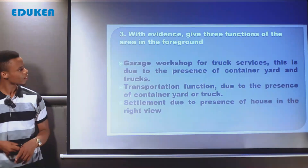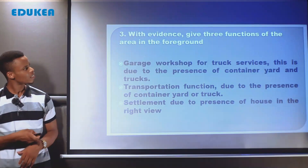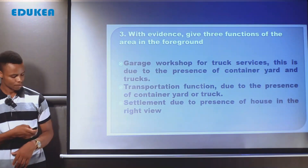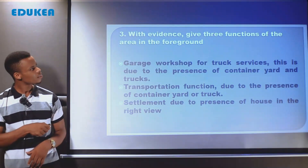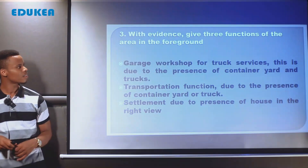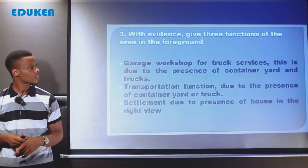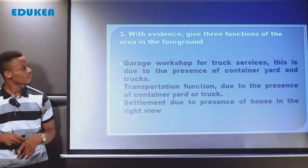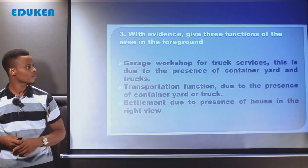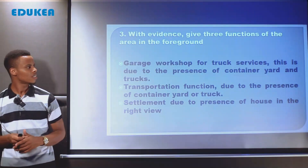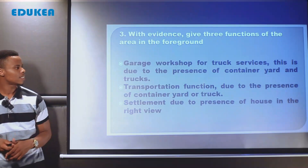Question number three asks: with evidence, give the land use fraction of the area in the foreground. We say the first fraction is a garage — a workshop for truck services. The evidence is that this is due to the presence of a container yard and trucks visible in the foreground of the photograph.